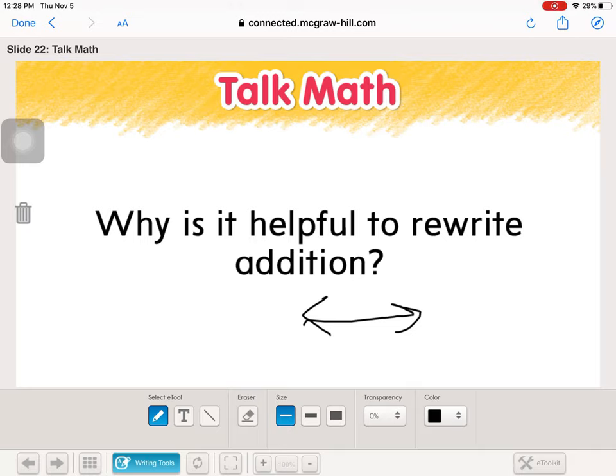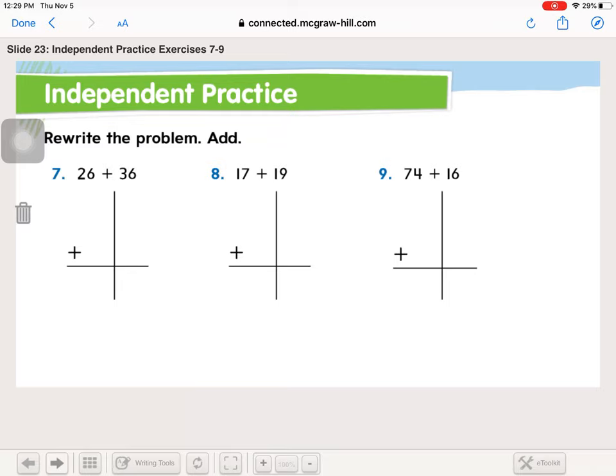So when we rewrite them up and down, it allows us to separate the ones and tens and keep track of where those numbers are going. So now you're ready for your independent practice, Problem Solving and Brain Builders on pages 193 and 194.